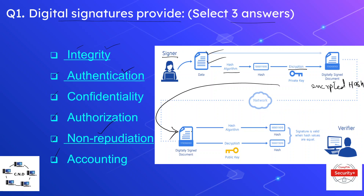The receiver then takes the hash of the original unencrypted document, and decrypts the encrypted hash using the public key of the sender, thus recovering the hash. If both hashes match, then the Integrity, Authentication, and Non-Repudiation of the data as well as the sender is valid.